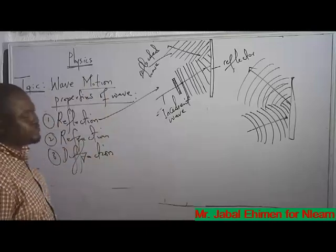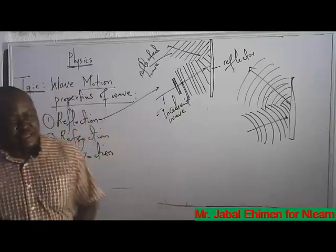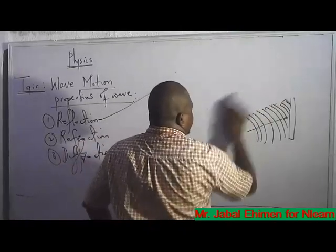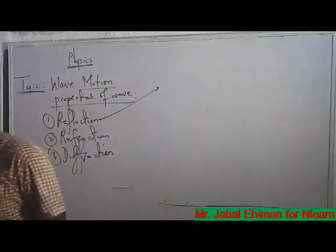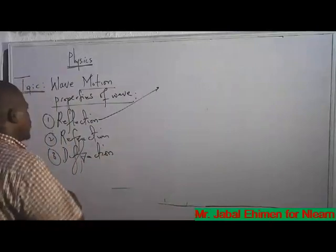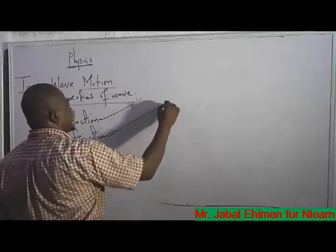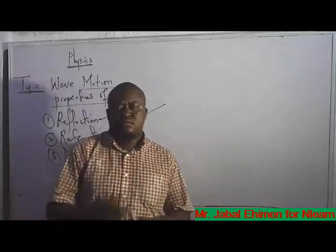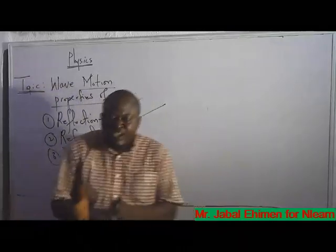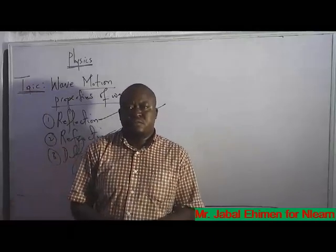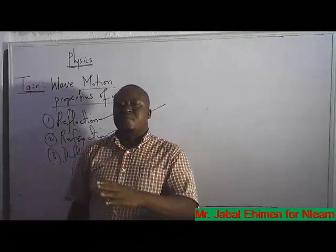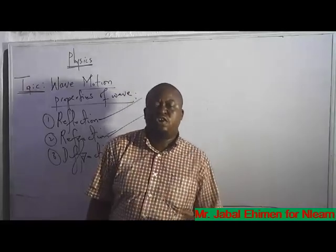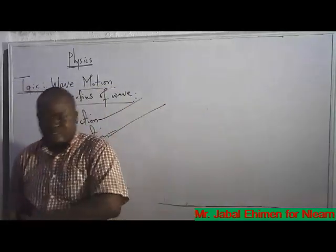The second property is refraction. Wave can be refracted. Refraction is when a wave changes its direction because it has moved from a less dense region into a more dense region, or from a more dense region into a less dense region — it must be opposite sides.